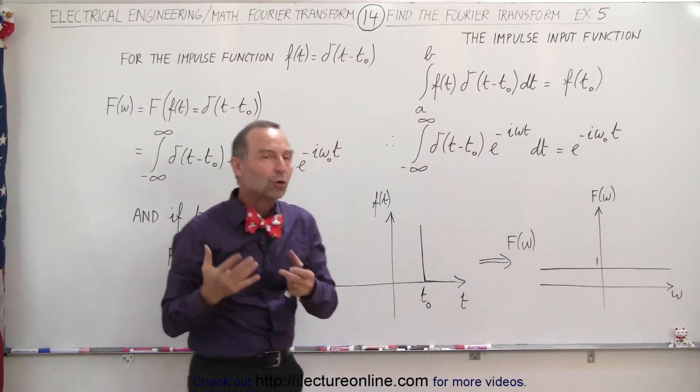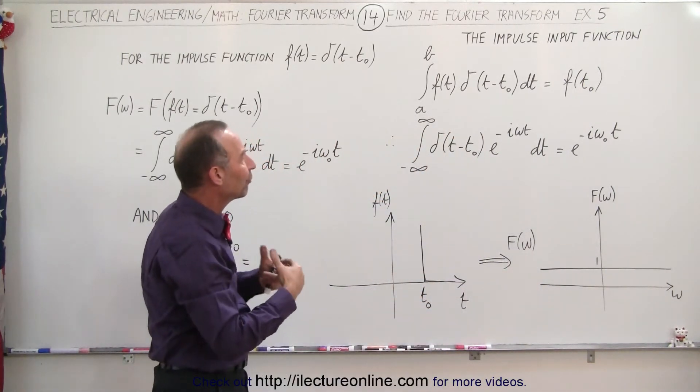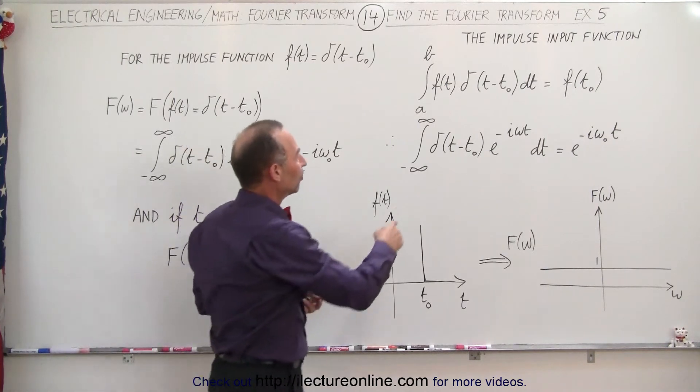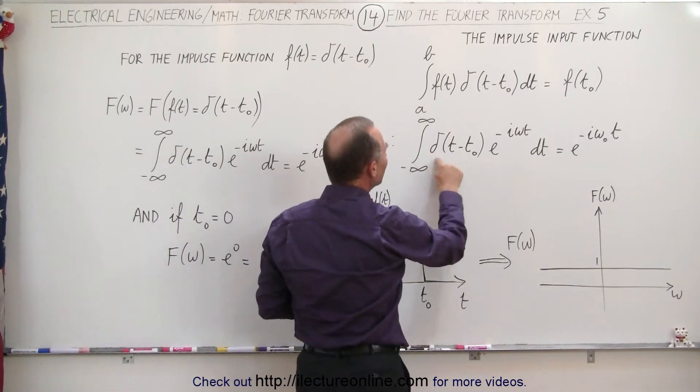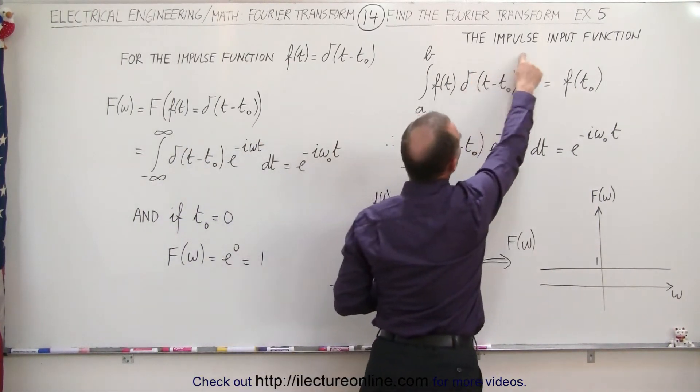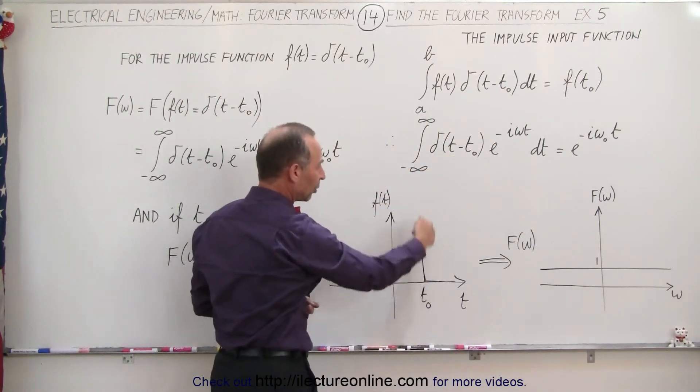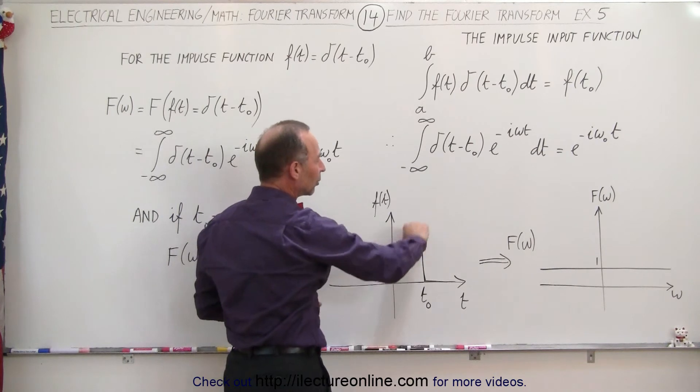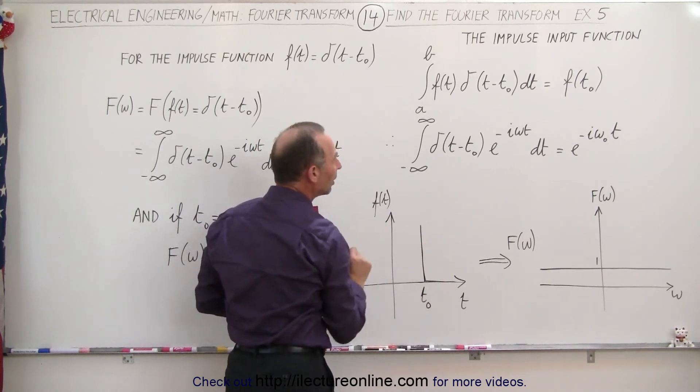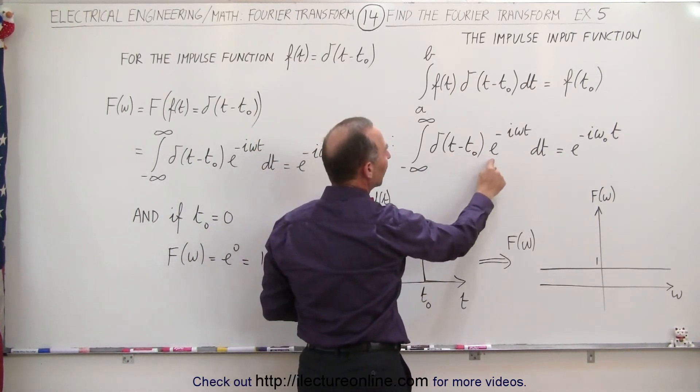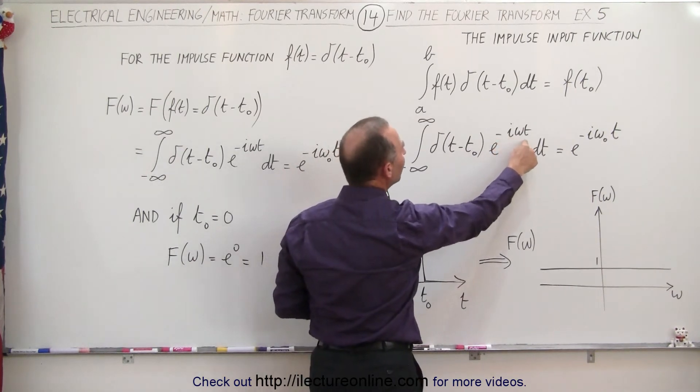And so if we apply that to the equation that we use to find the Fourier transform, you can see here that this would then be the input function, so the impulse input function will now be a delta function, and here we have a picture of what that would look like, so that the integral of that delta function is equal to 1. We can then take the delta function and multiply times e to the minus i omega t.